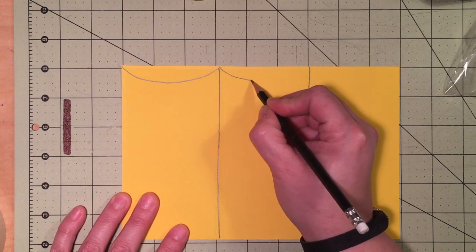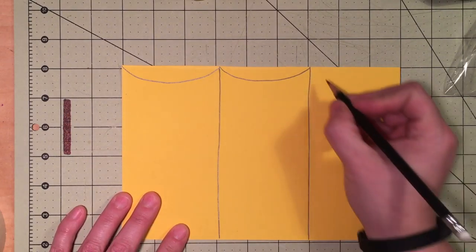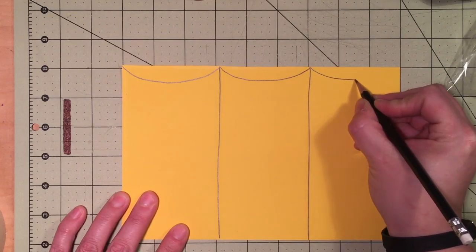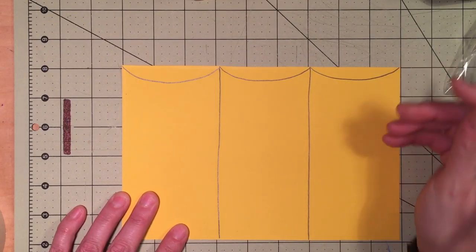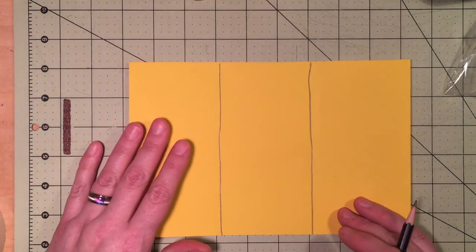From this corner to this corner, we draw a letter U. Flip it over, do the same to these three.